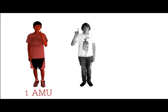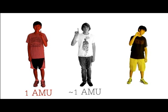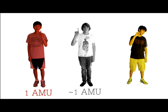Neutrons are a bit more massive than protons, but are still considered to have a mass of one AMU. Electrons, on the other hand, have a very small mass. It takes around 1800 electrons to equal the mass of one proton, so the electron's mass is usually considered almost zero.